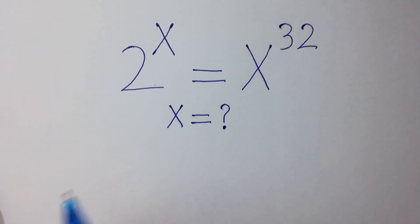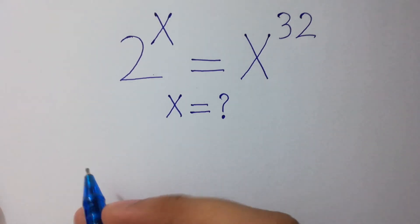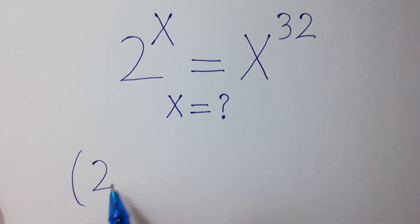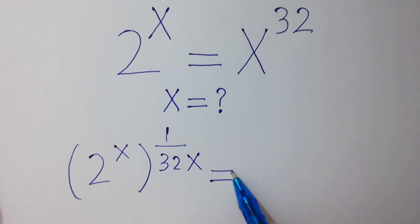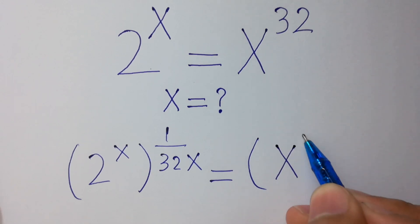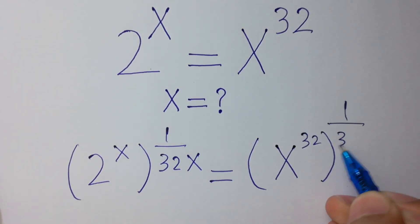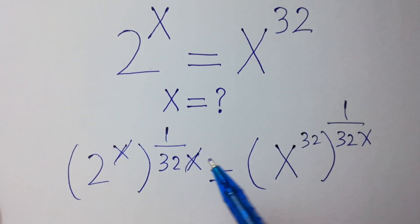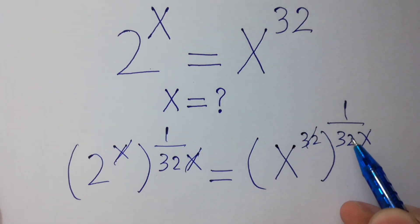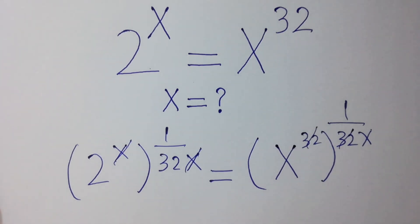First of all, take 1 over 32x on both sides. x and x will be cancelled, and here 32 and 32 will be cancelled.